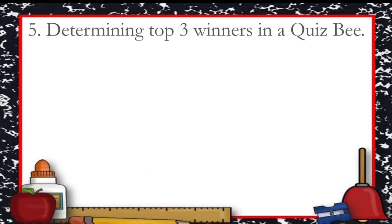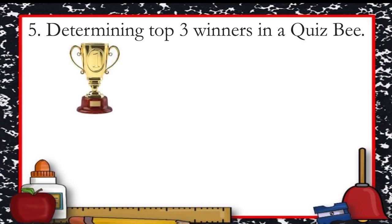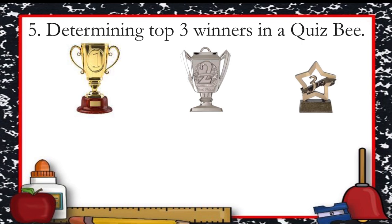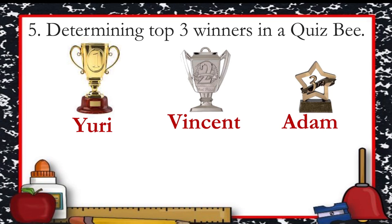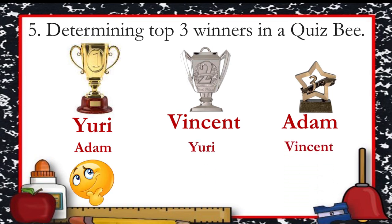Number five: determining the top three winners in a quiz bee. The winners are first, second, and third place. For example, Yuri won first place, Vincent second, and Adam third. If Adam takes first place, Yuri second, and Vincent third, that is different from the first set. Therefore it illustrates a permutation.